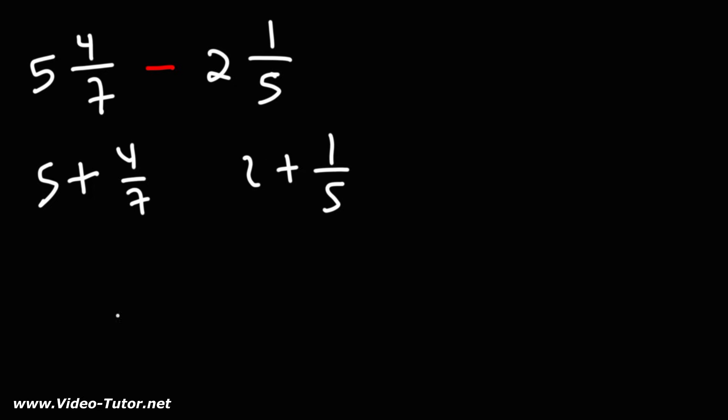Now, notice that we have a subtraction sign. That subtraction sign is applied to both the 2 and the 1 over 5. So what we have here is 5 plus 4 over 7 minus 2 minus 1 over 5.